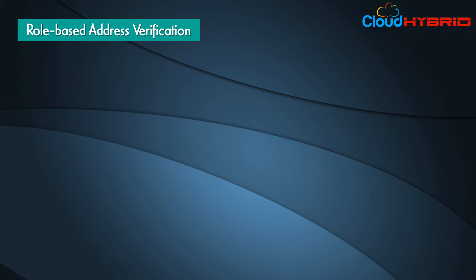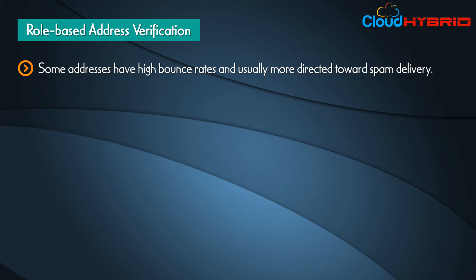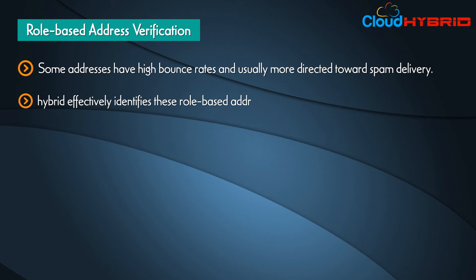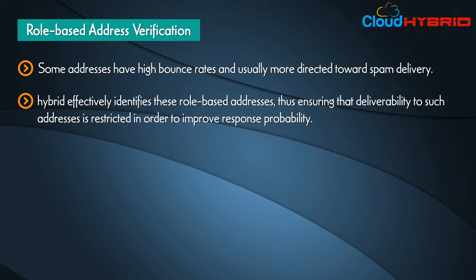Role-based address verification: some addresses have high bounce rates and are usually directed towards spam delivery. Cloud hybrid effectively identifies these role-based addresses, ensuring that deliverability to such addresses is restricted in order to improve response probability.